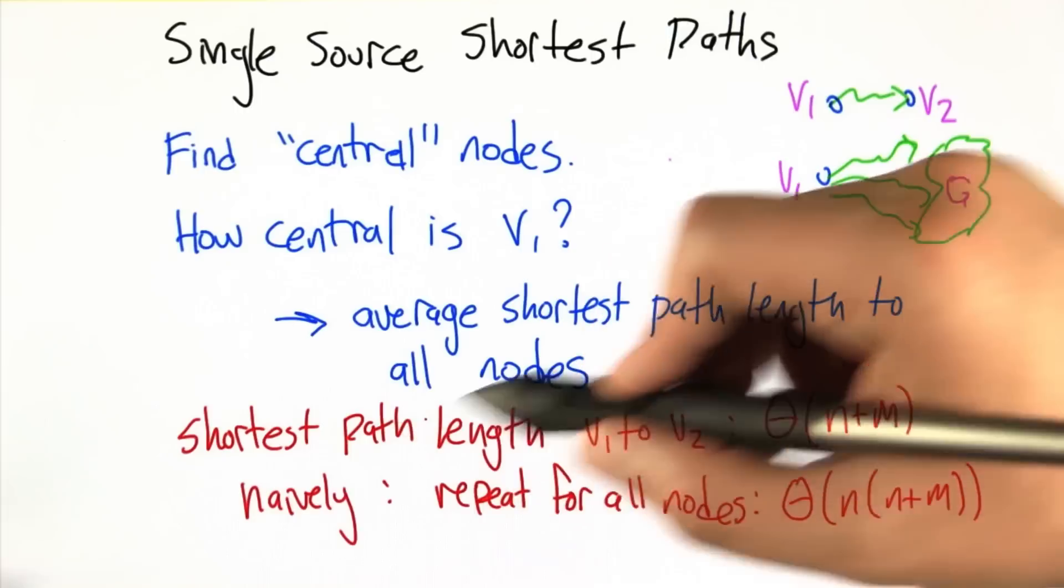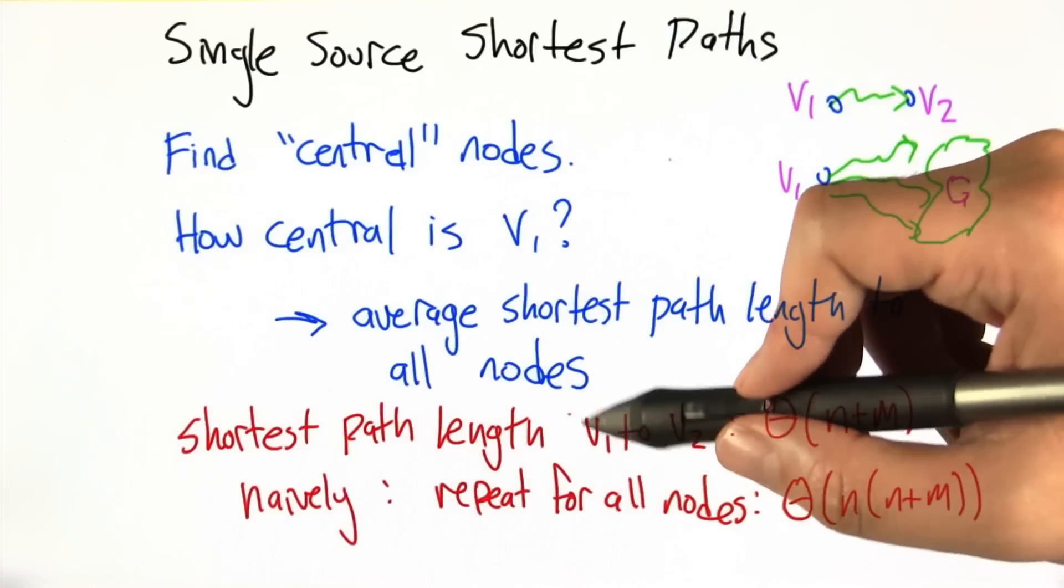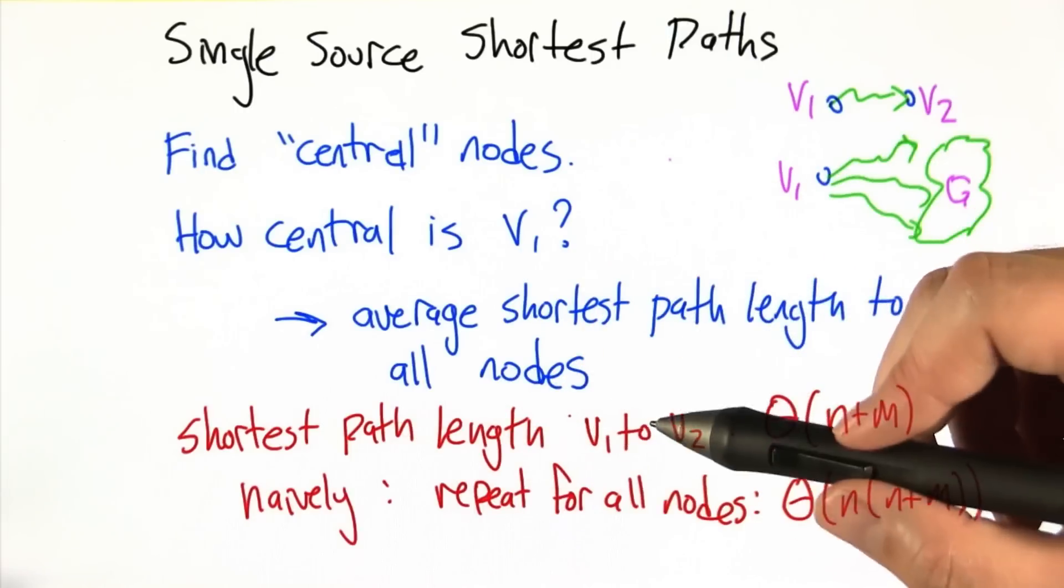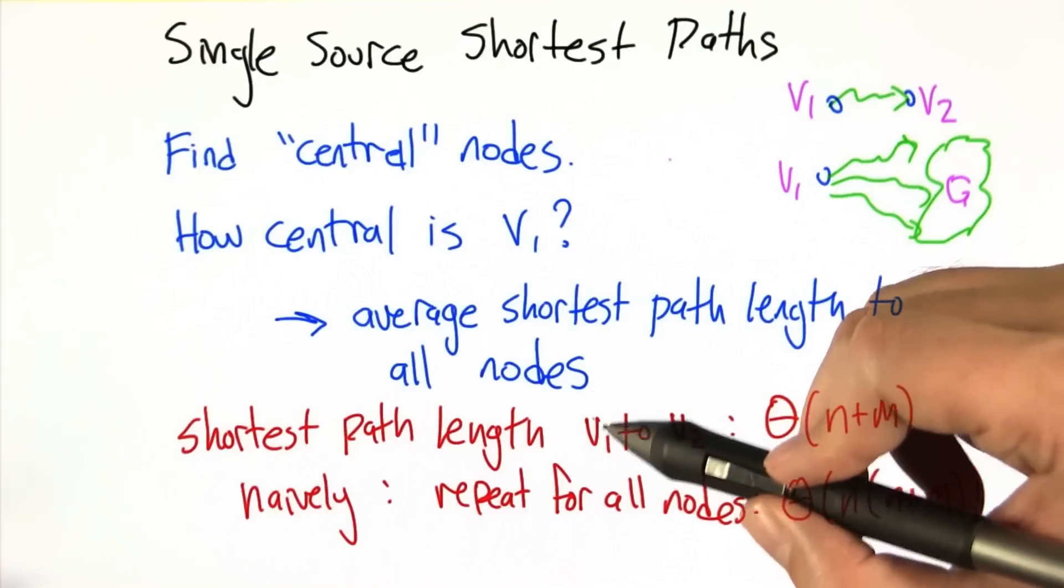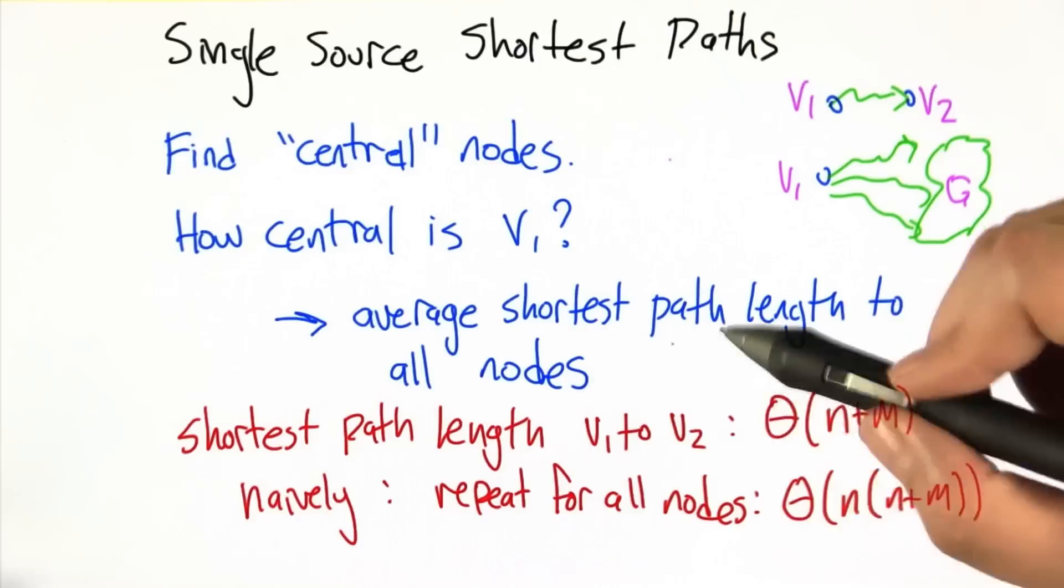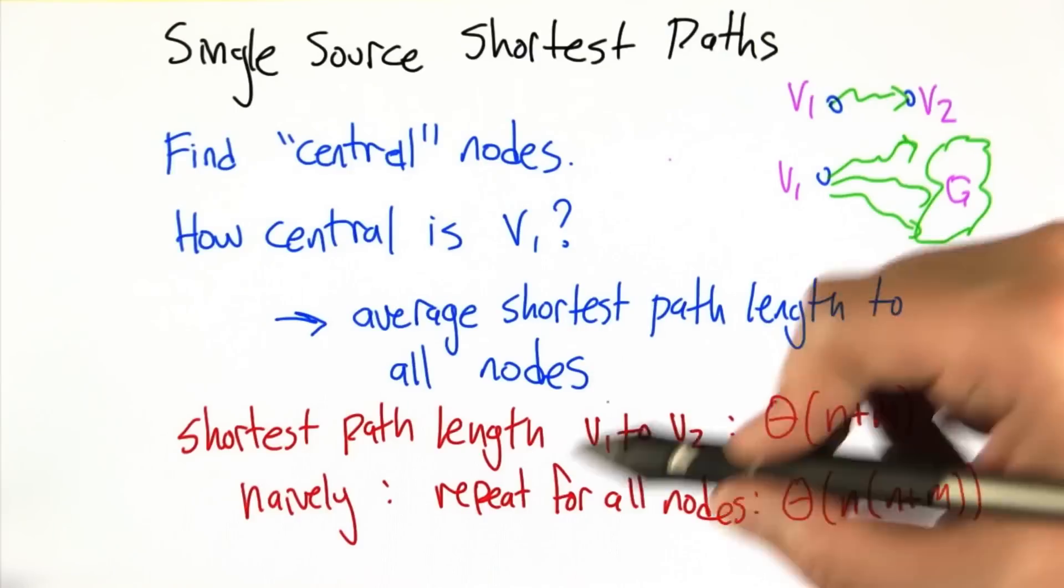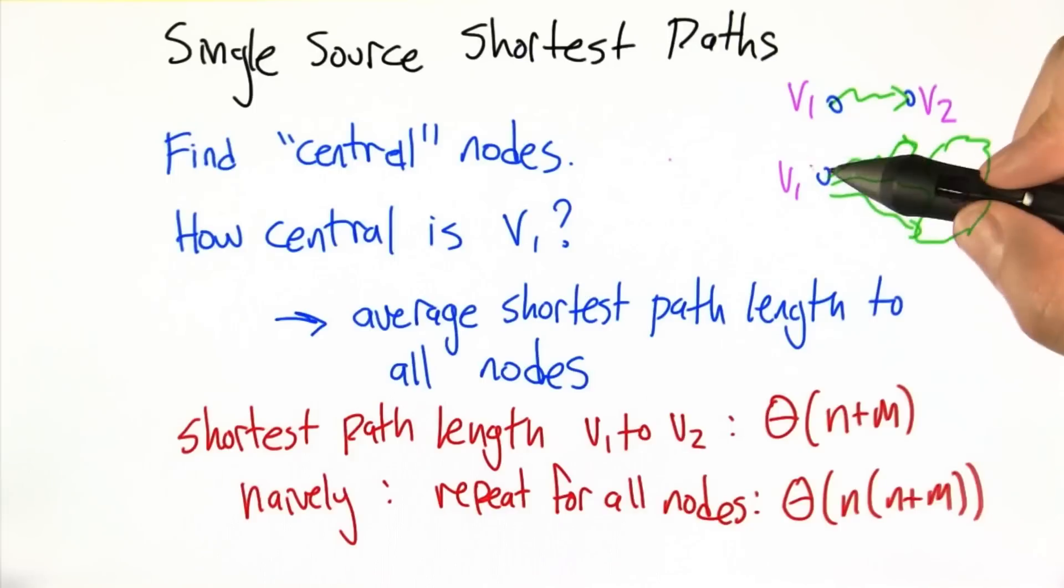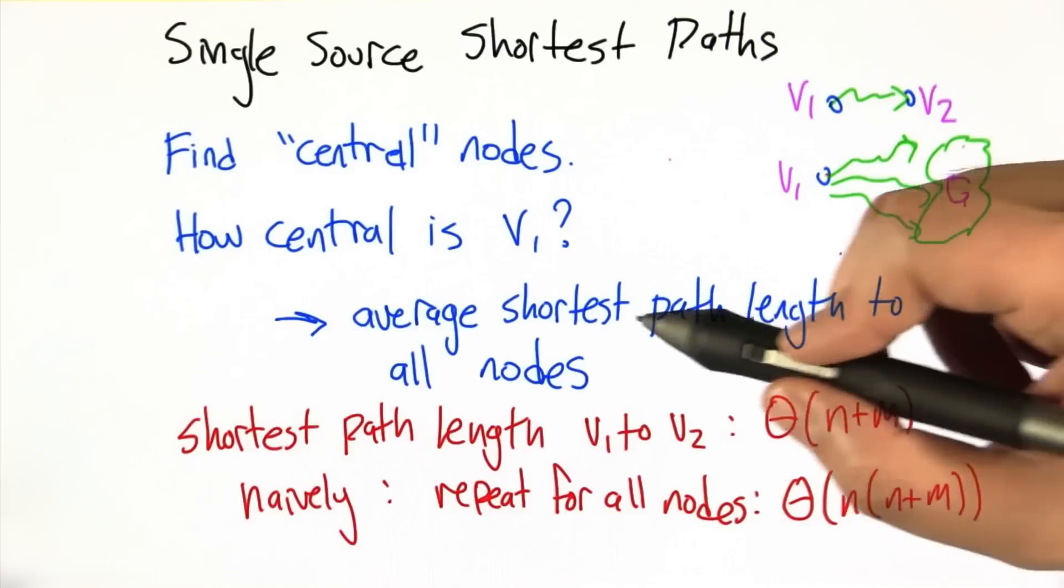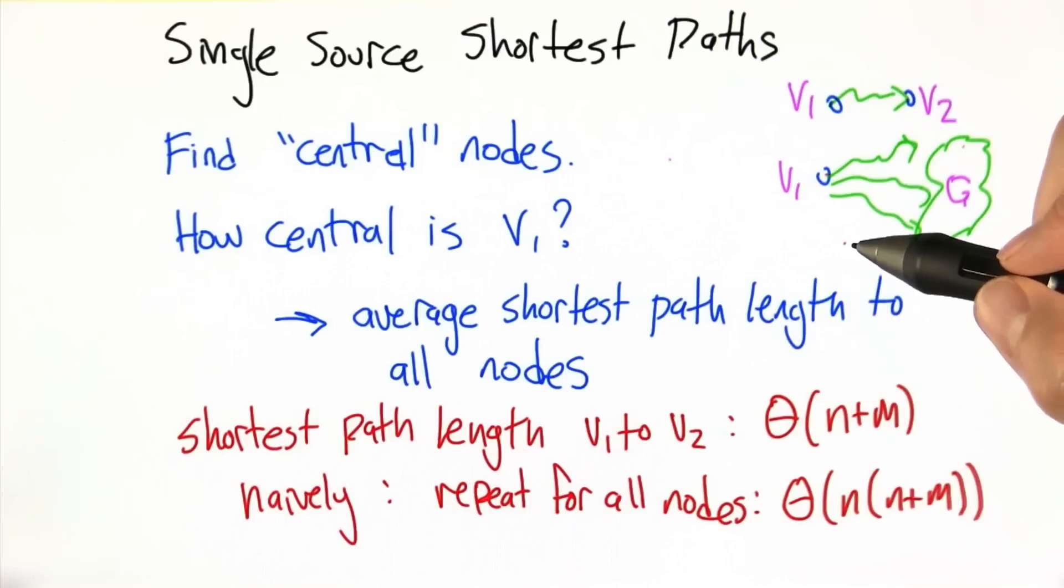So following sort of a naive kind of algorithm design, well this should work and it's not so terrible, is to say well if we want to know the shortest distance from V1 to each of the other nodes in the graph, we can just repeat this process once for each possible target node. So we find the shortest path from V1 to V2 and from V1 to V3 and V1 to V4 and V1 to V5, and we can get all those distances and then average them to get this measure of centrality.